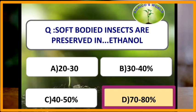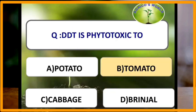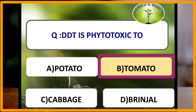Soft-bodied insects are preserved in 70 to 80 percent ethanol. DDT (dichlorodiphenyltrichloroethane) is phytotoxic in tomato. Phytotoxic means it is poisonous to plants.